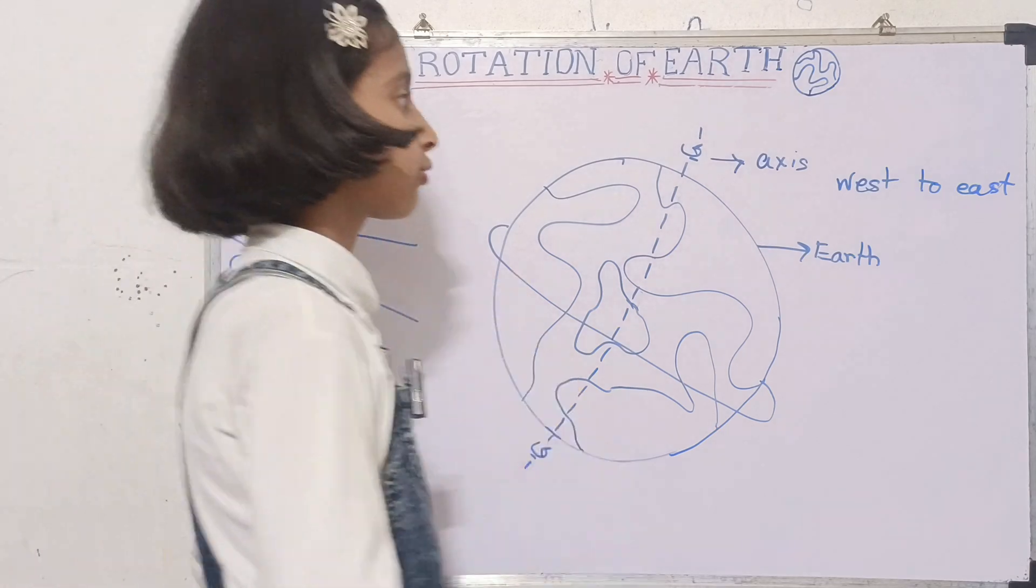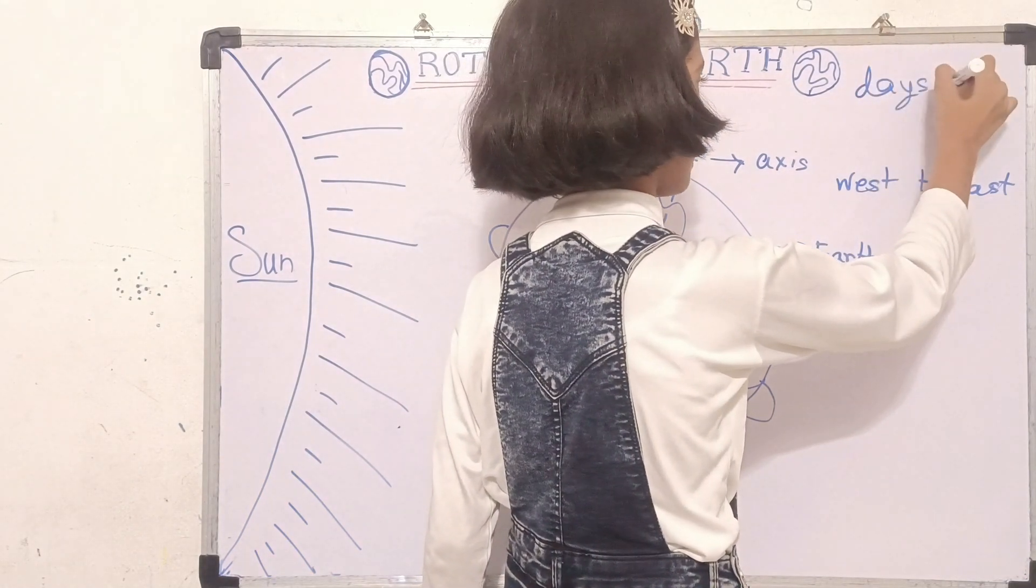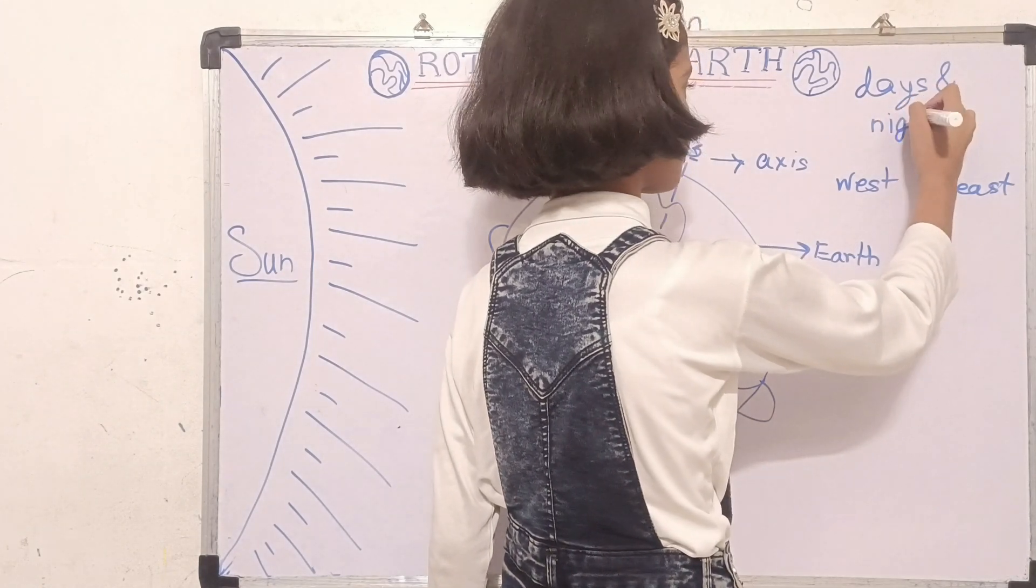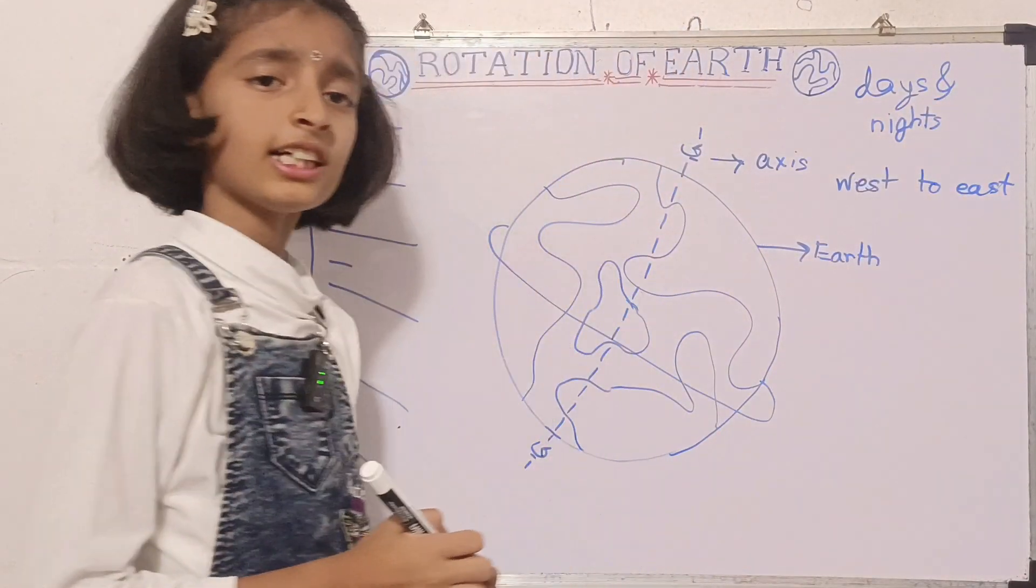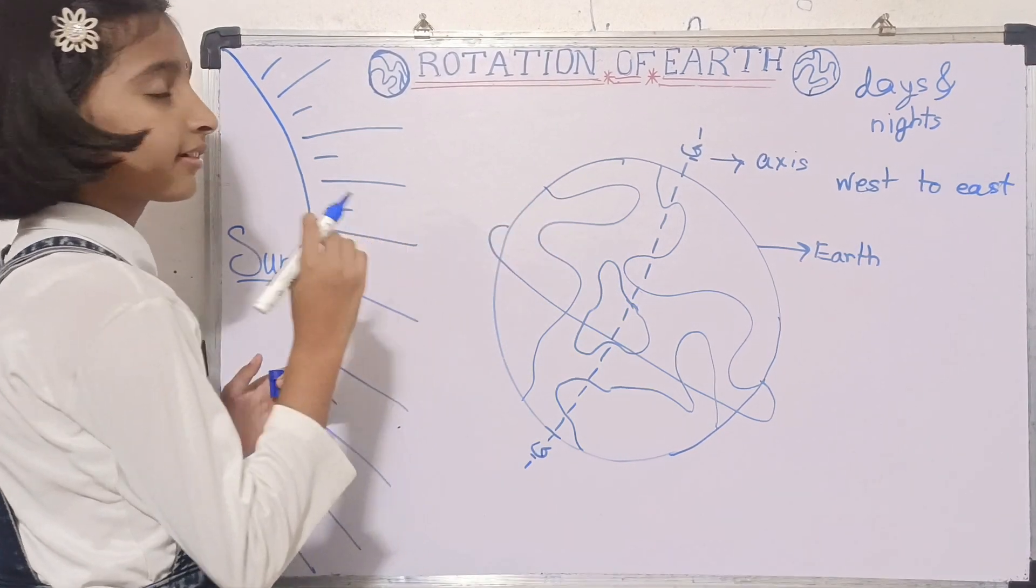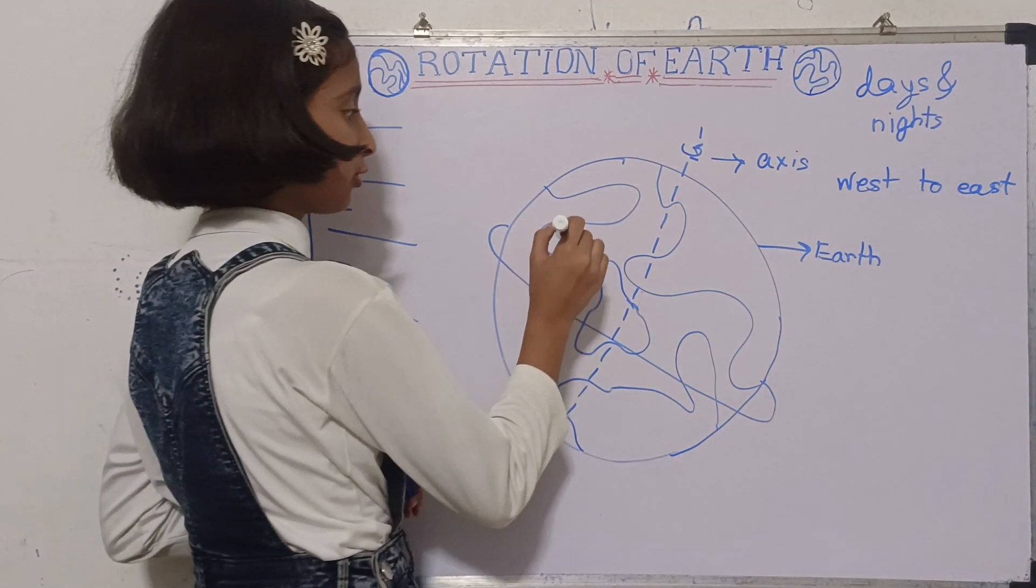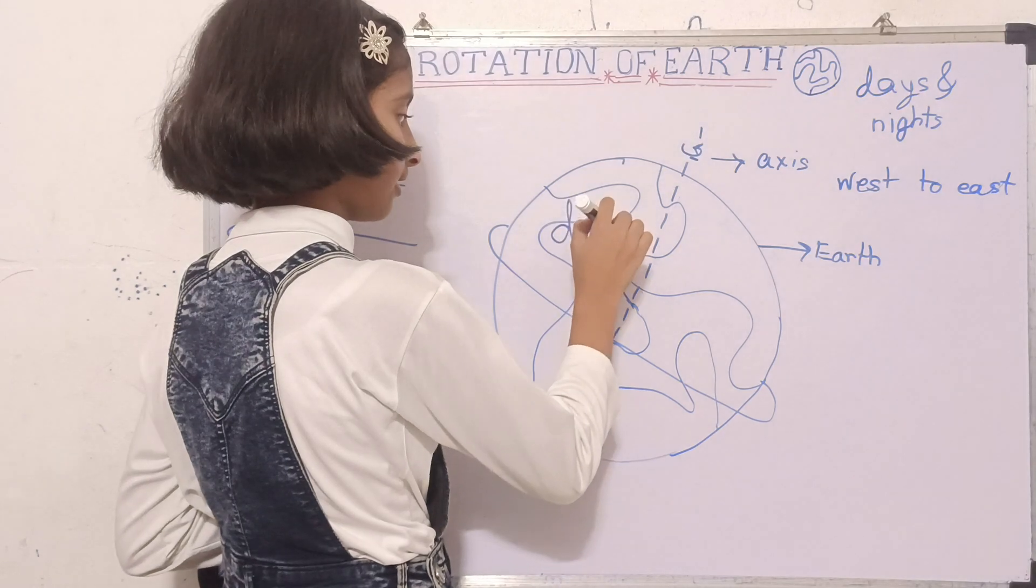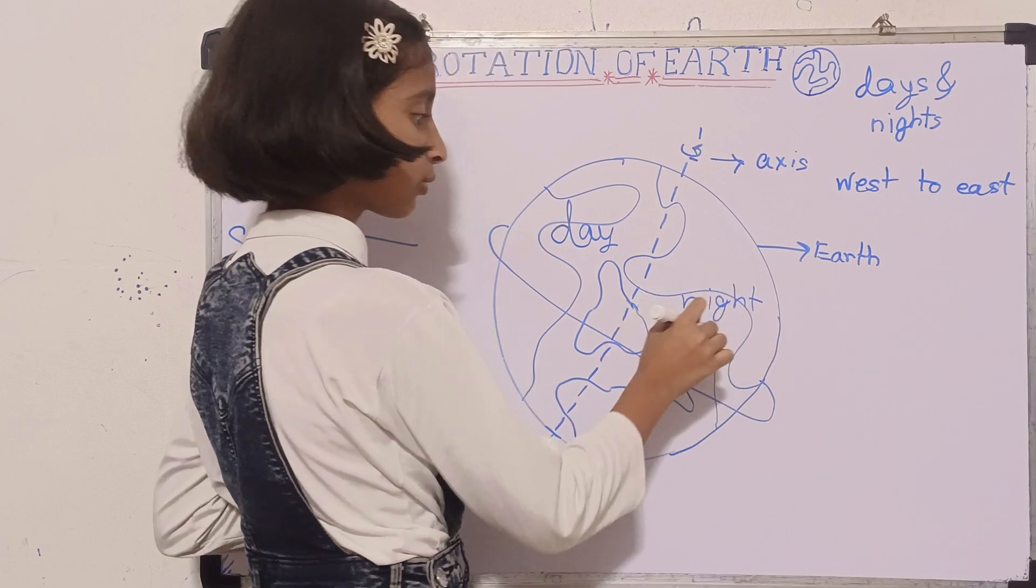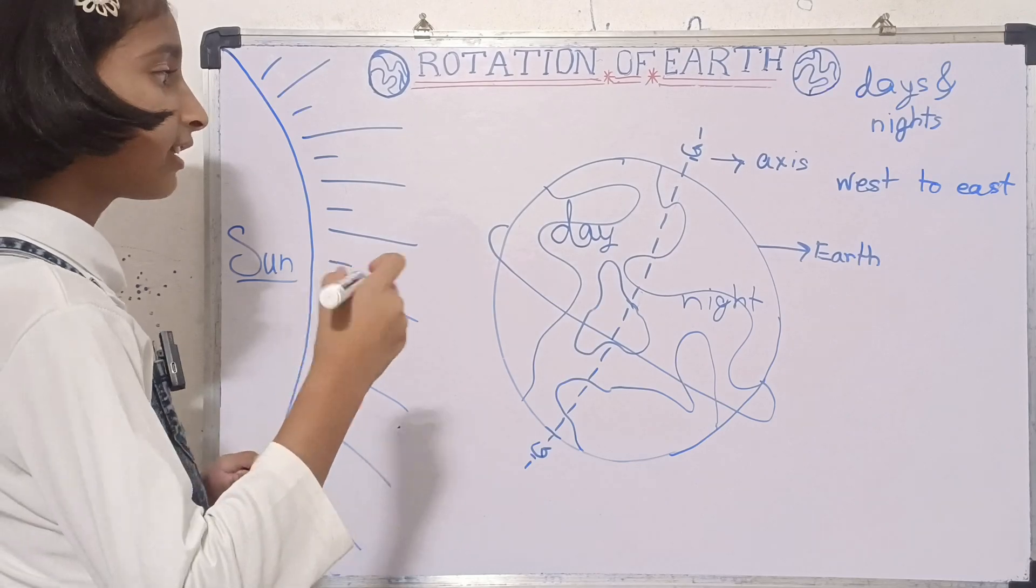Rotation causes days and nights. How does rotation cause days and nights? What do you see at daytime? You see the Sun at daytime. So this part will be having day, and this part will not be getting the heat of the Sun, so it will be having nighttime.